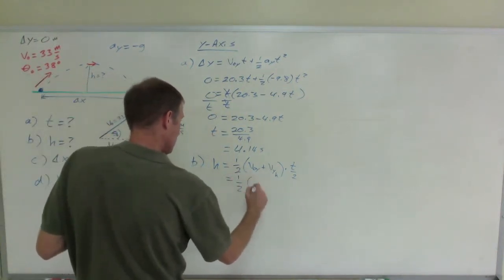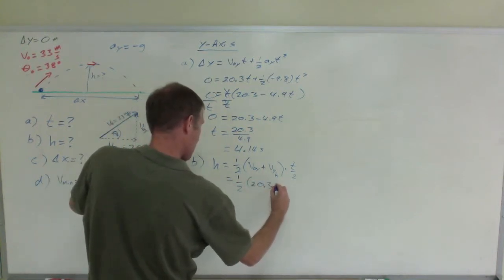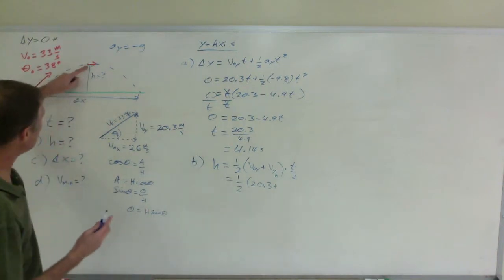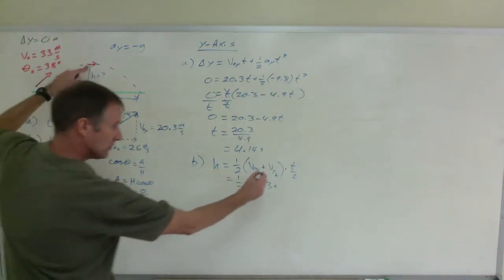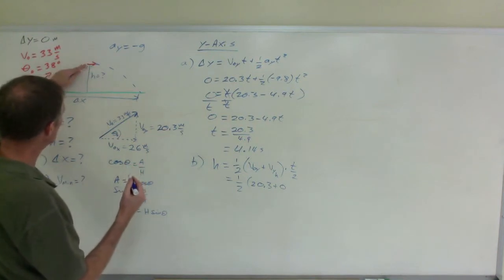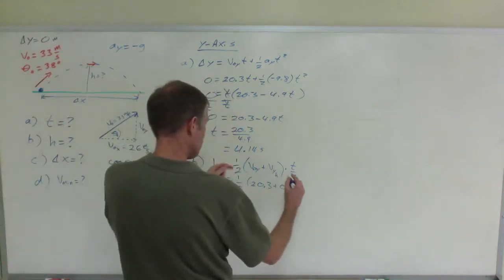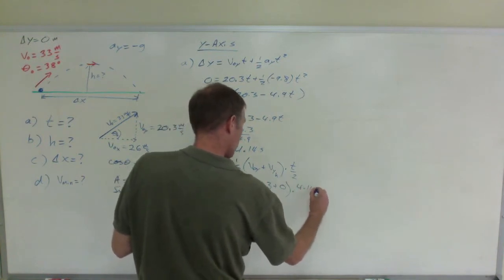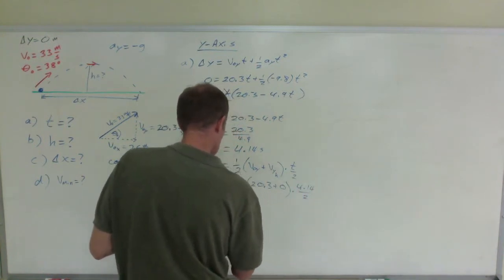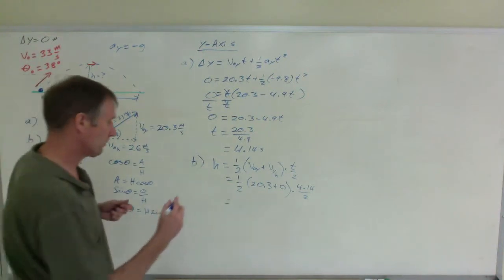Well, this is one half times v sub 0 y is 20.3, plus its velocity at the top - it stopped rising, so that is 0. I am in the y-axis. It stopped going up, right here. And then that is going to be half of this time, and so 4.14 divided by 2. And when you solve for that, you get a height of 21 meters.